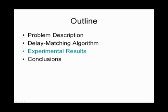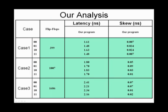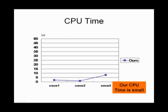You can see the experimental results. We use three test cases. Case 1 has 399 flip-flops. Case 2 has 1007 flip-flops. And Case 3 has 1686 flip-flops. You can see our program can achieve almost zero skew in each condition. And our runtime is very quickly.